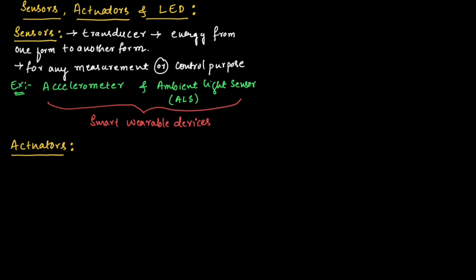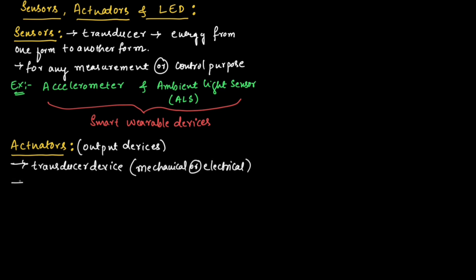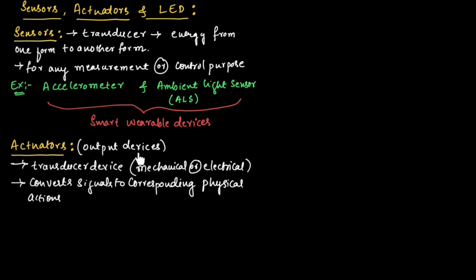Now let us understand actuators. Actuators are output devices. They are transducer devices that can be mechanical or electrical. An actuator converts signals to corresponding physical actions.